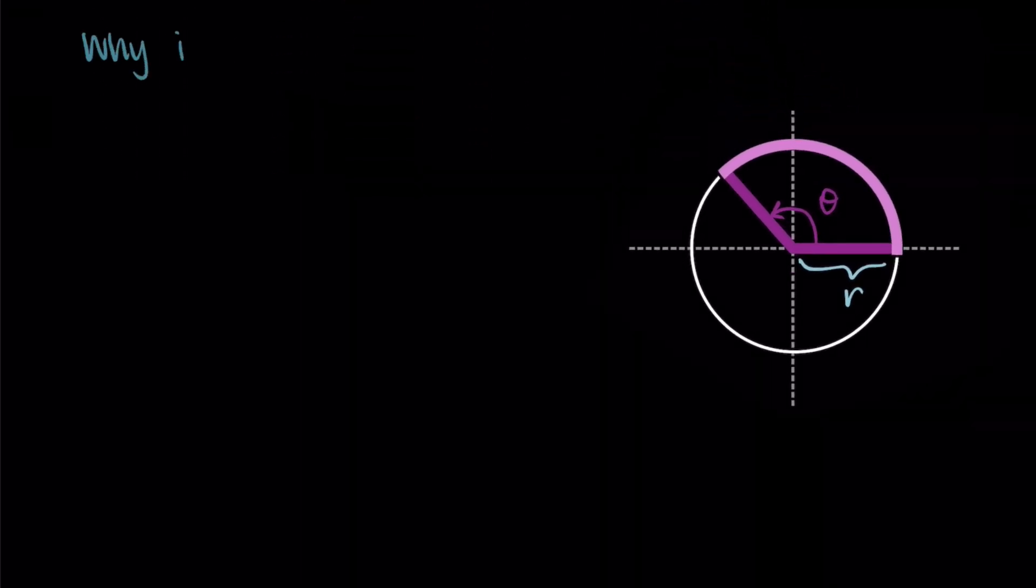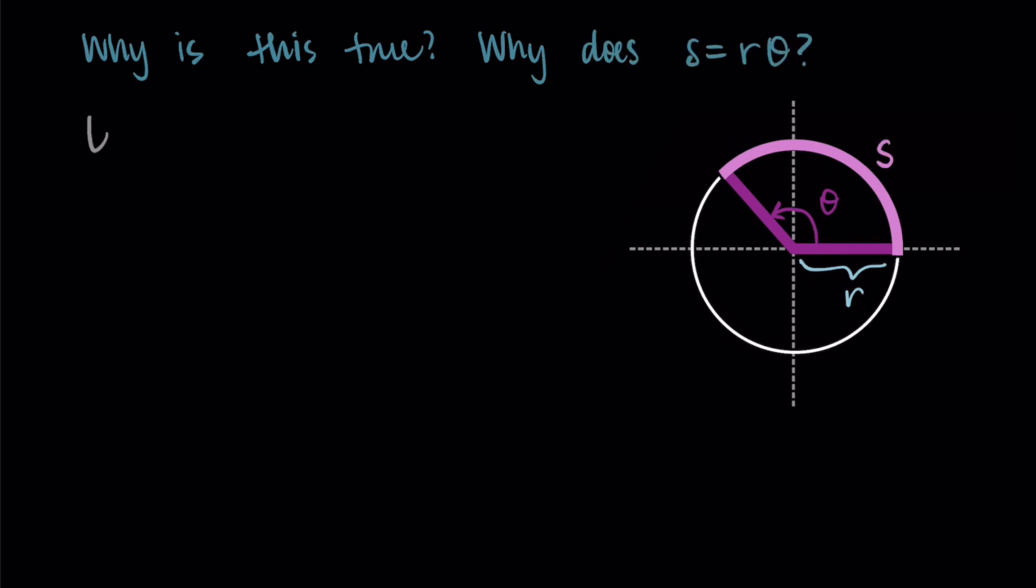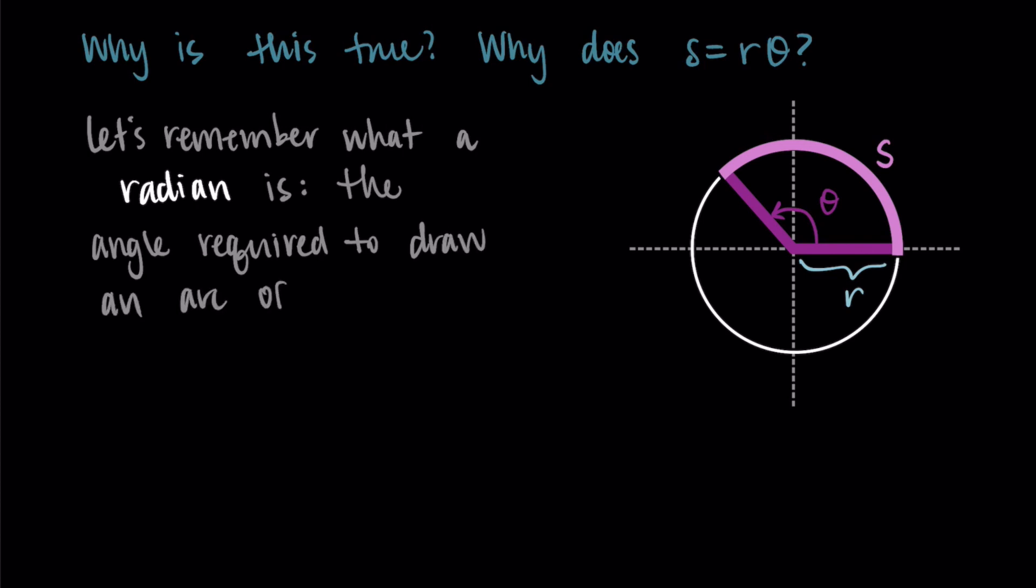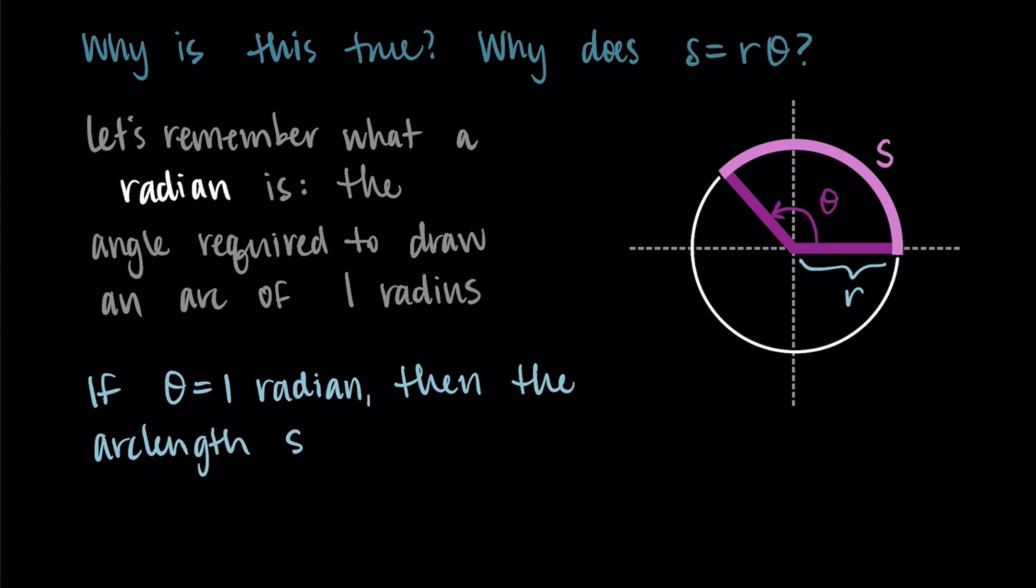So why is this true? Let's talk about why s would equal r times theta. So if we remember back to what a radian is, we defined a radian as the angle required to draw out an arc that is one radius long. So if we took the radius and drew out an arc that long, that would be one radian.